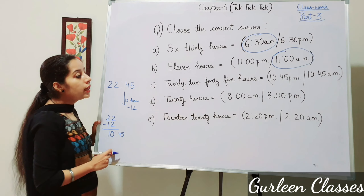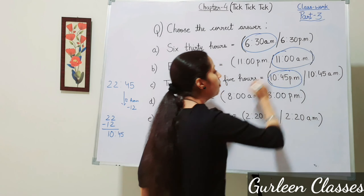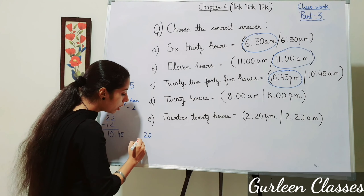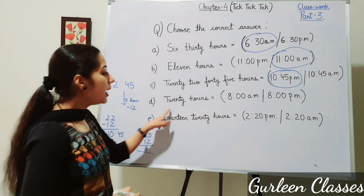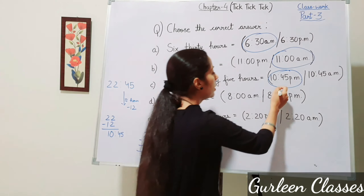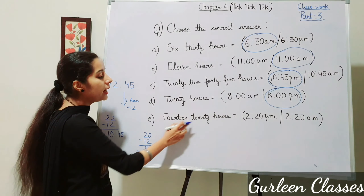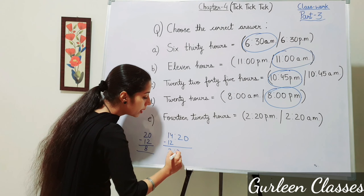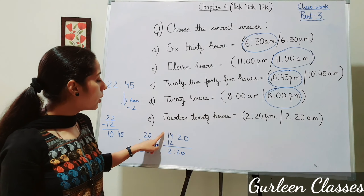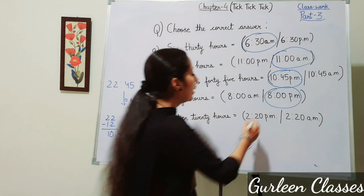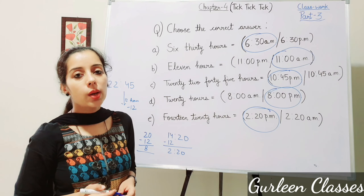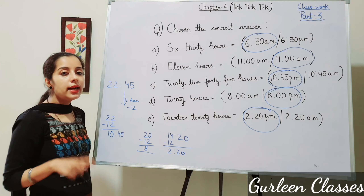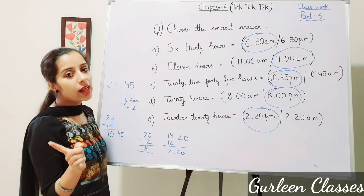Part D: 20 hours — convert to 12-hour clock: 20 minus 12 equals 8, so it is 8 PM. Part E: 14:20 hours — 14 minus 12 equals 2, minutes remain the same, so it is 2:20 PM. To convert 24-hour clock to 12-hour clock, simply subtract 12. To convert 12-hour clock to 24-hour clock, add 12; minutes remain the same.